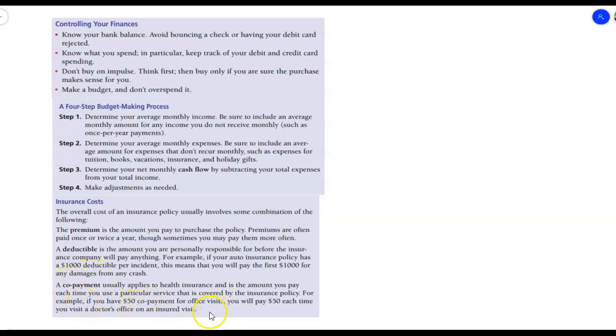And a copayment usually applies to health insurance, and it's the amount you pay each time you use a particular service that is covered by the insurance policy. For example, if you have a $50 copayment for office visits, you will pay $50 each time you visit a doctor's office on an insured visit. Yeah, health care costs are incredibly high in our country.